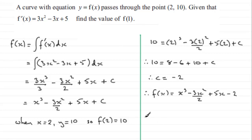So when it comes to finding the value of f(1), all we need to do is just substitute 1 into our equation here, giving us 1³ - 3(1²)/2 + 5(1) - 2. And if you work that out, you'll find f(1) comes out to be 2.5.